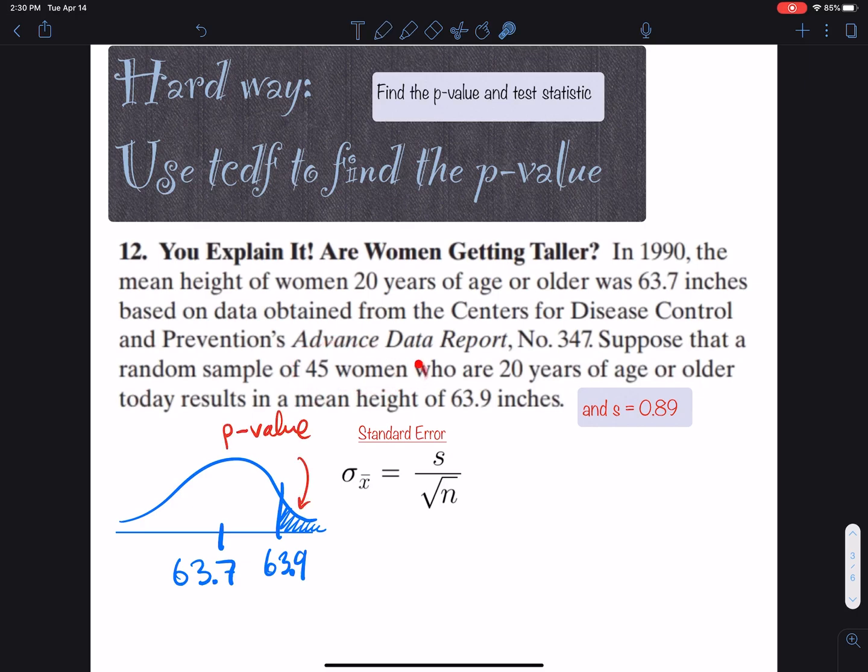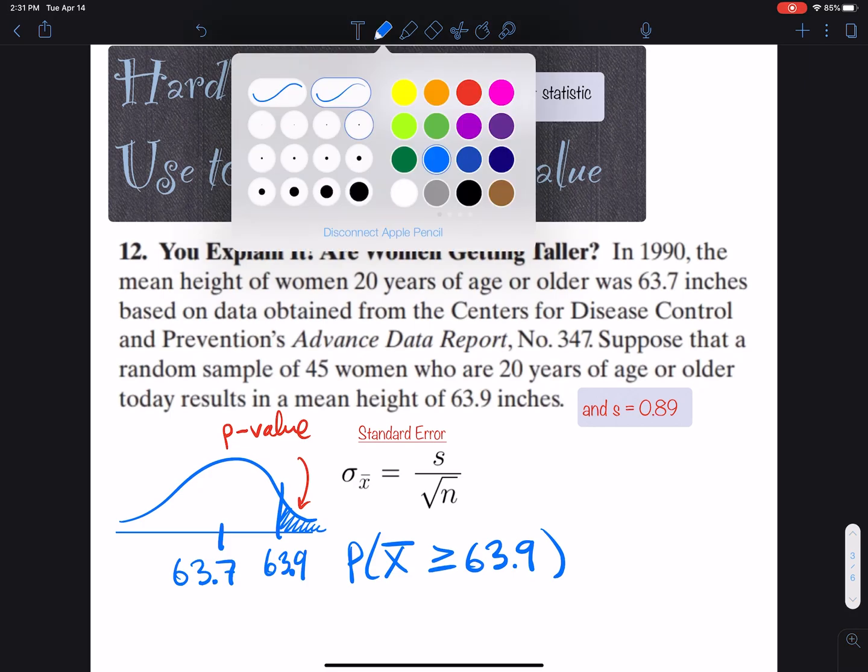Since we're dealing with the mean of 45 women, we use the standard error instead of standard deviation because we're dealing with a sampling distribution. We're finding the probability that x̄ is greater than or equal to 63.9. This distribution represents all sample means, and we want the probability that a sample is 63.9 or bigger.